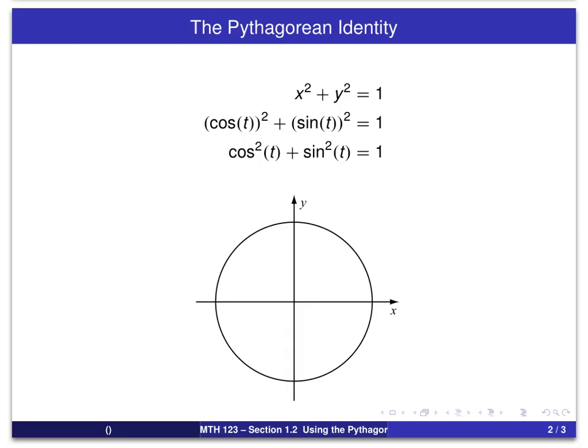As a bit of review, here's the information we will need about the Pythagorean identity. Remember that we're working on the unit circle. The equation for the unit circle is x squared plus y squared equals 1.